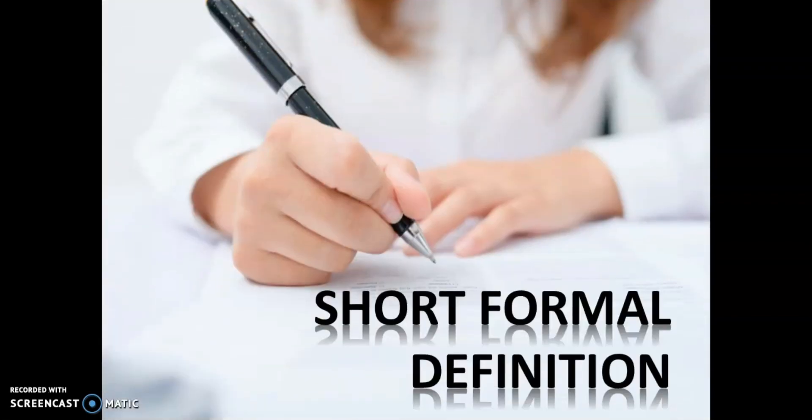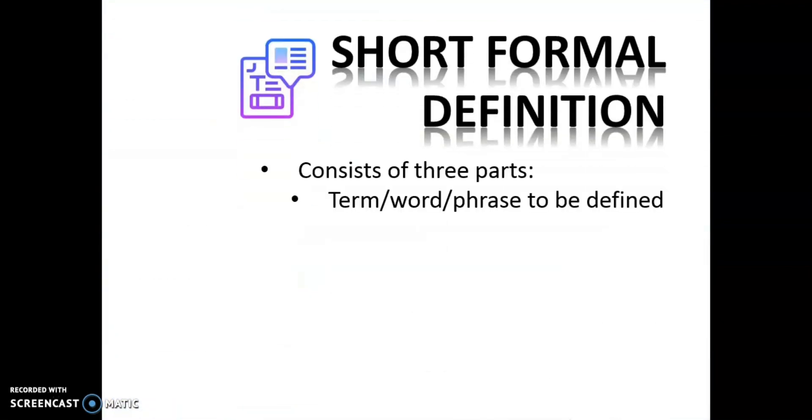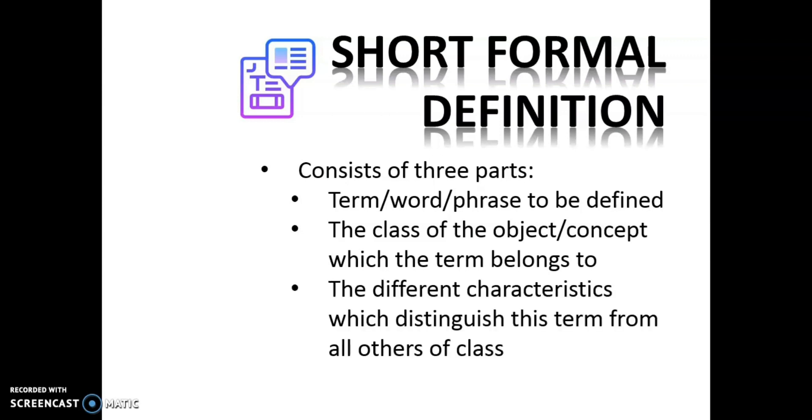Let's focus on short formal definition. Basically, short formal definition will consist of three parts: the term, word or phrase that needs to be defined; the class of the object or concept which the term belongs to; and the differentiating characteristics which distinguish this term from all others of that class.